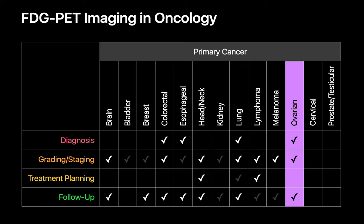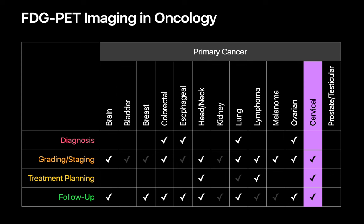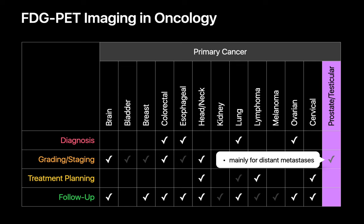FDG PET-CT is also often used in the staging of ovarian cancer and identifying any recurrence. With cervical cancer, FDG PET-CT is effective in lymph node staging of locally advanced cervical cancer, for identifying distant metastases, and may influence decisions regarding radiation field and dose to involved lymph nodes. FDG PET-CT is also effective in identifying recurrence and residual disease after therapy. The role of FDG PET-CT in prostate and testicular cancer, however, is relatively limited and confined to distant metastasis detection in a subset of staging scenarios.